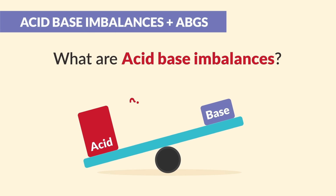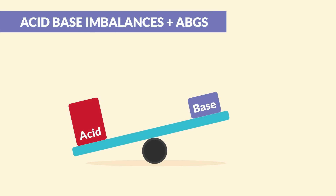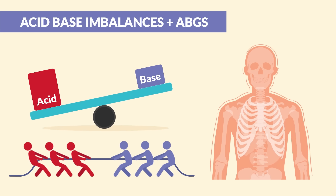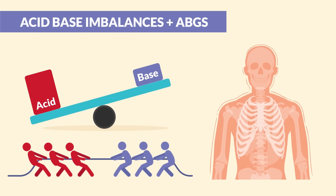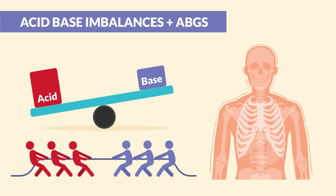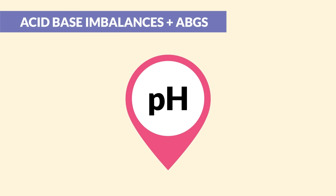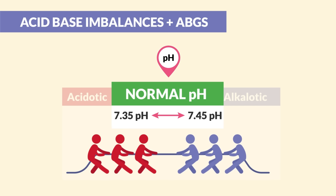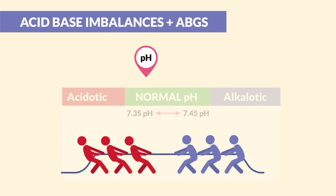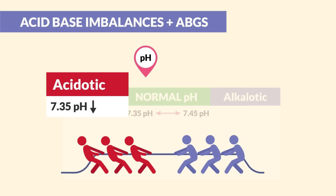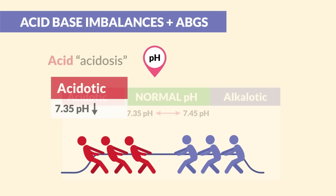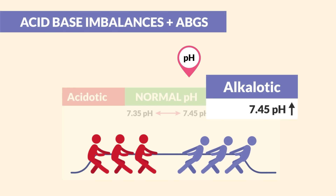So what are acid-base imbalances? It's just the balance of acid and base of the body, kind of like a tug-of-war. The body loves to keep these in balance, measured in blood via the pH. Normal pH is 7.35 to 7.45. Too low, under 7.35, the body goes into acidosis. Too high, over 7.45, the body goes into alkalosis.